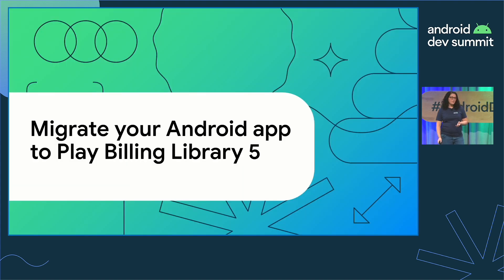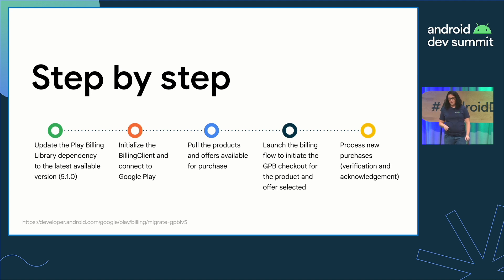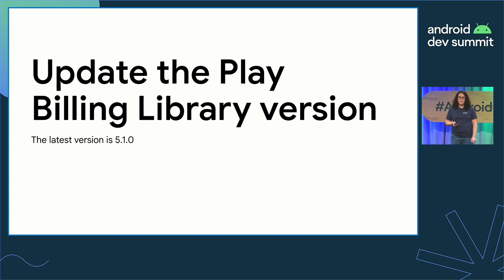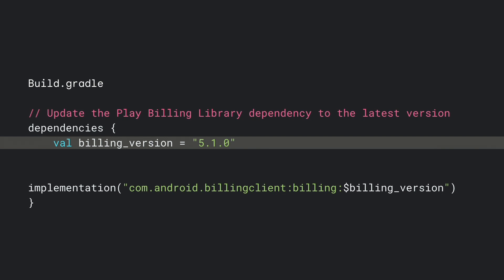Now that you've learned how to configure your subscriptions catalog in the new model, let's see how to change your app to sell these new products. We'll follow the steps in the Google Play Billing Library 4 to 5 Migration Guide on the Android Developer Documentation site. The first step is upgrading your app's dependency to the latest version of the Play Billing Library in your build.gradle file. The latest version is 5.1.